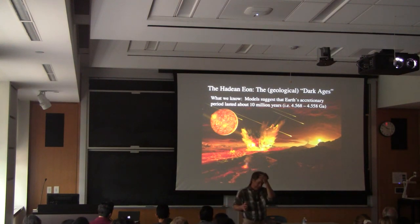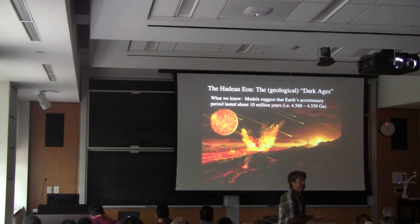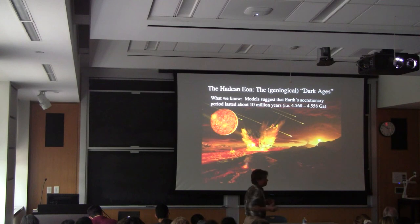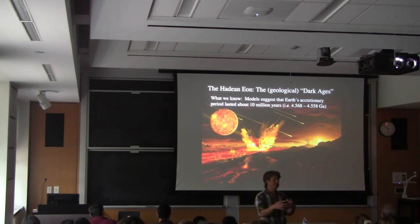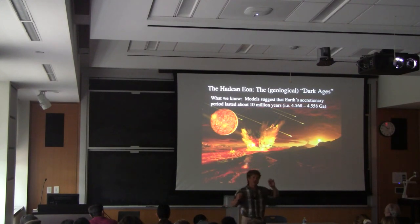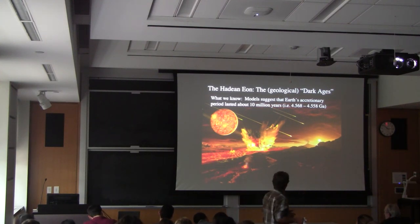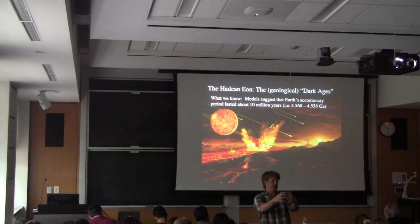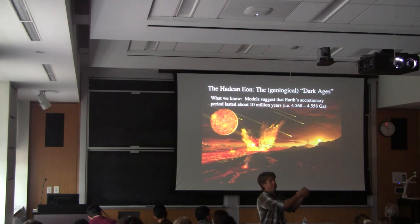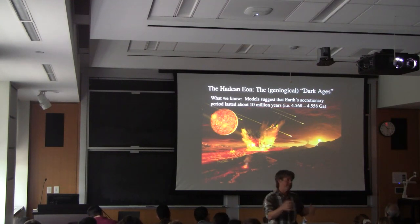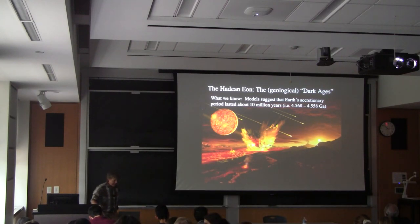If we accept the nebular hypothesis for the formation of our solar system, we can create computer-based mathematical models of how a solar system would form and apply that to our own situation. Based on that, we can predict that this period of accretion — starting with the formation of calcium-aluminum inclusions that ultimately get accreted into chondrites — lasts about 10 million years. From first solid matter to a sun and a bunch of newly formed planets is pretty quick. Over the course of 4.5 billion years, that's pretty quick.